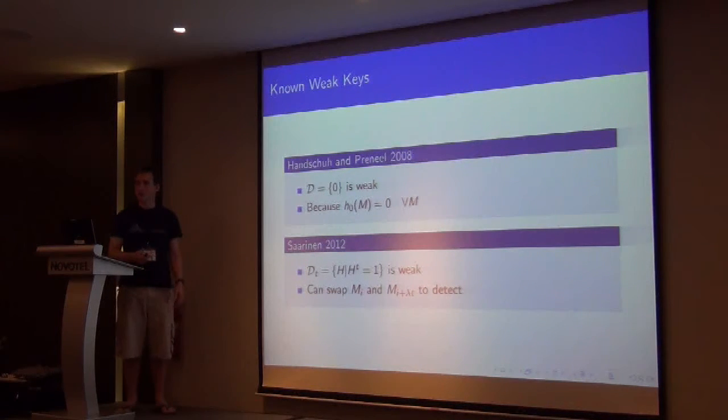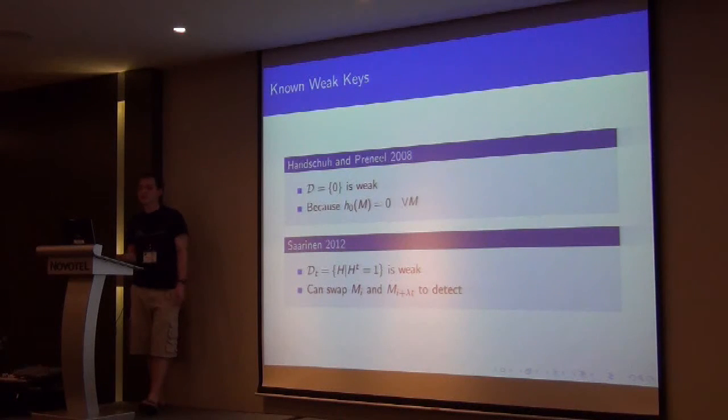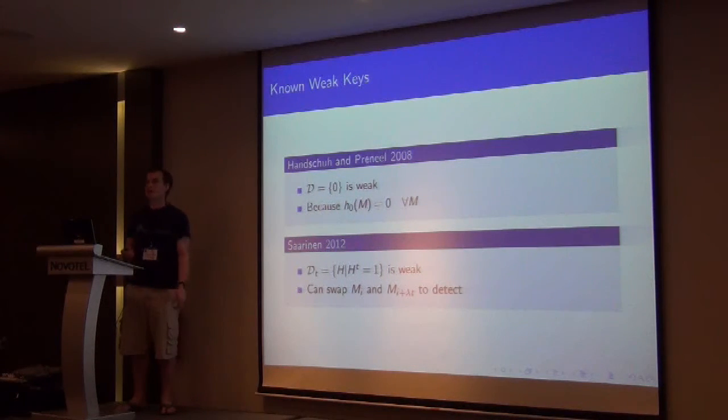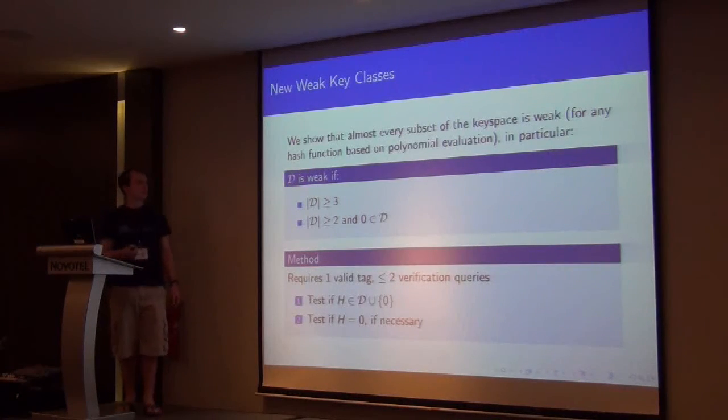So you never get anything different after you've hashed. And Saranen says, well, actually these subgroups, we can detect whether the key is in one of these subgroups. Because if our forgery, when we swap two message blocks is successful, then our key's in this subgroup.